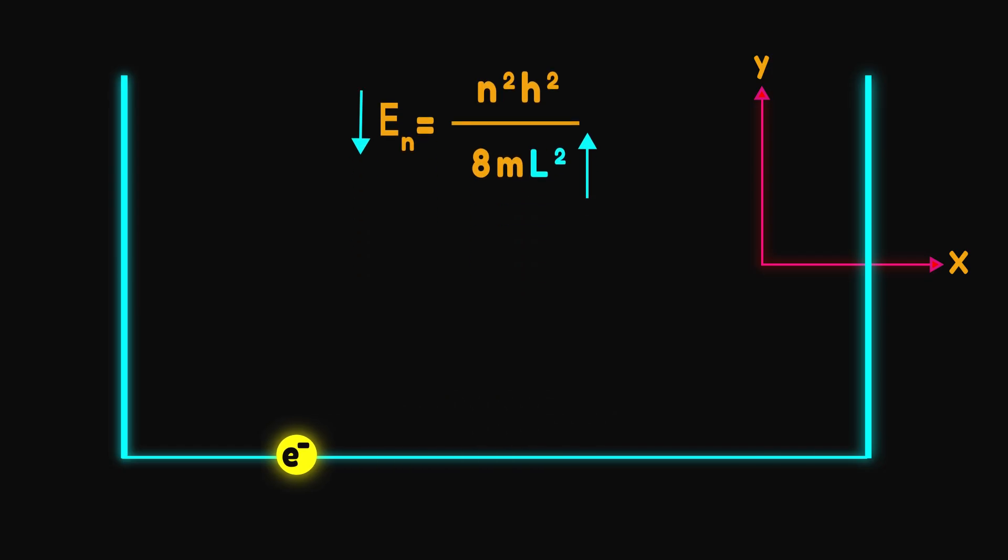When resonance occurs in a molecule, it means that the length of our box increases. As a result, electrons occupy more space and their energy decreases. This is why resonance is a stabilizing concept.